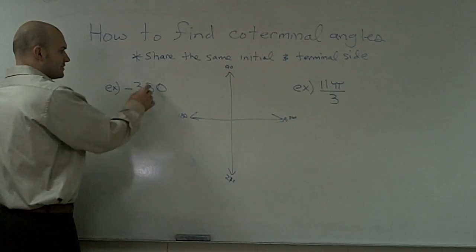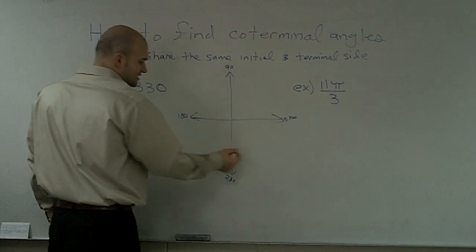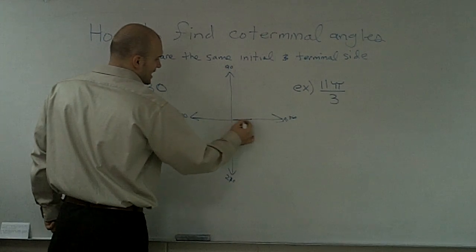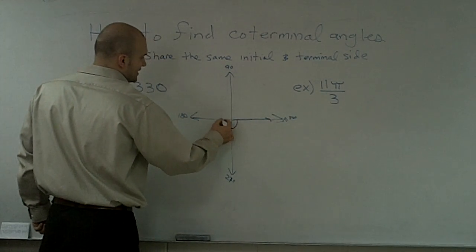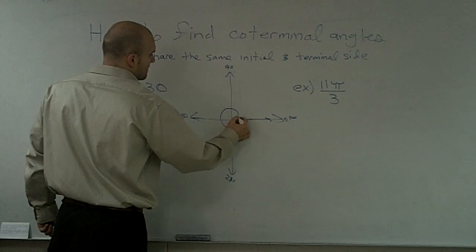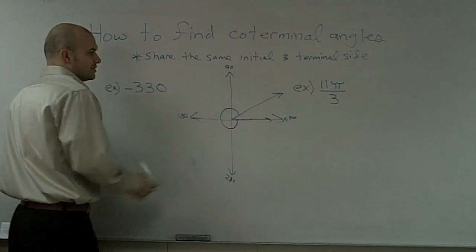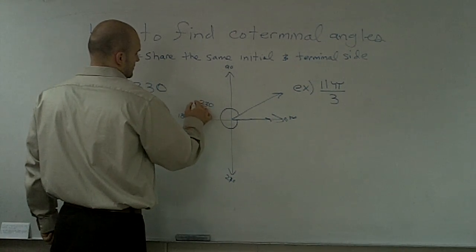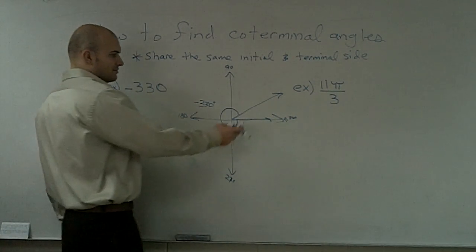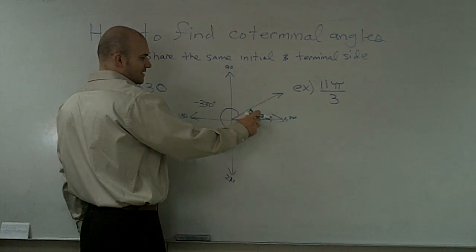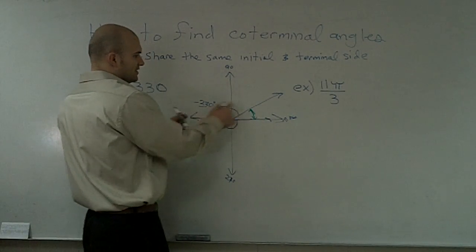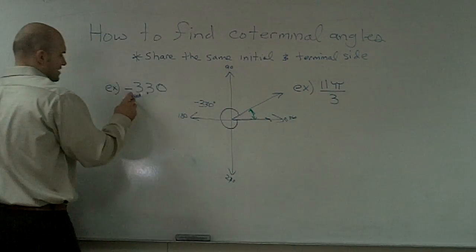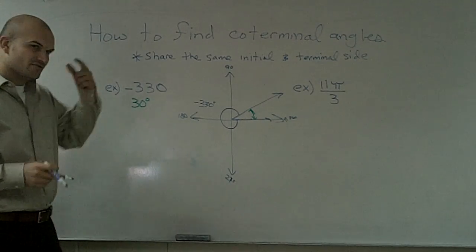If I was going to go negative 330 degrees, I've got to go this direction first. I'm going to go all the way to here to 330 degrees. I know if I need to figure out my coterminal angles, it's just going to be this angle right here. If this is 330, to get to 360, this angle is just 30 degrees.